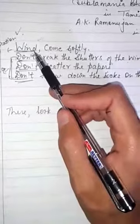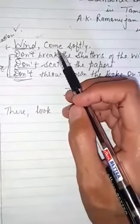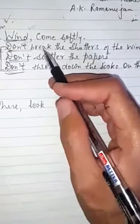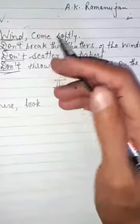This is personification. When the poet says wind come softly, it means the poet is requesting the wind to be gentle, to flow slowly.